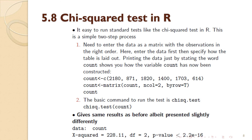The basic command to run the test is chisq.test, which stands for chi-squared dot test. This command is applied to the matrix 'count'. This gives you the same results as the hand calculation, albeit presented slightly differently — the same numerical answer, the same p-value less than 0.05, and the same interpretation.